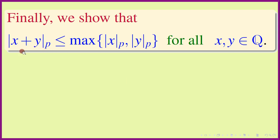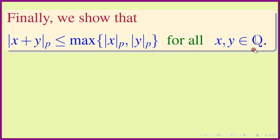Finally, we show the ultrametric inequality — the strong triangle inequality — which is the third property for non-Archimedean norms, and which automatically implies the ordinary triangle inequality. The strong triangle inequality to be satisfied is: |x + y|_p ≤ max(|x|_p, |y|_p) for all x, y in Q, the field of rationals.